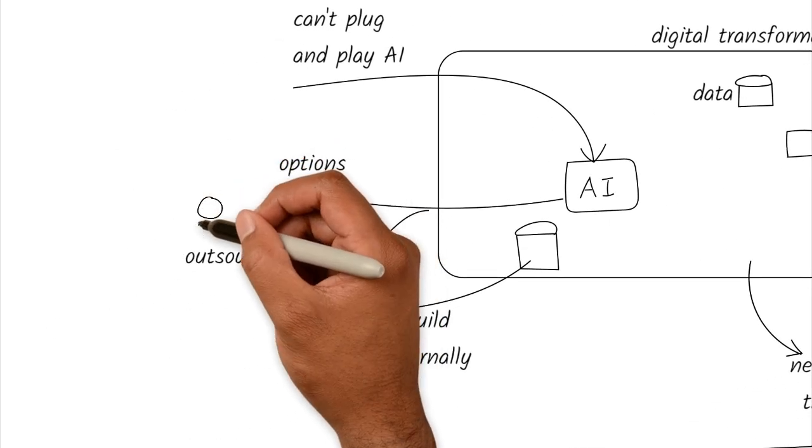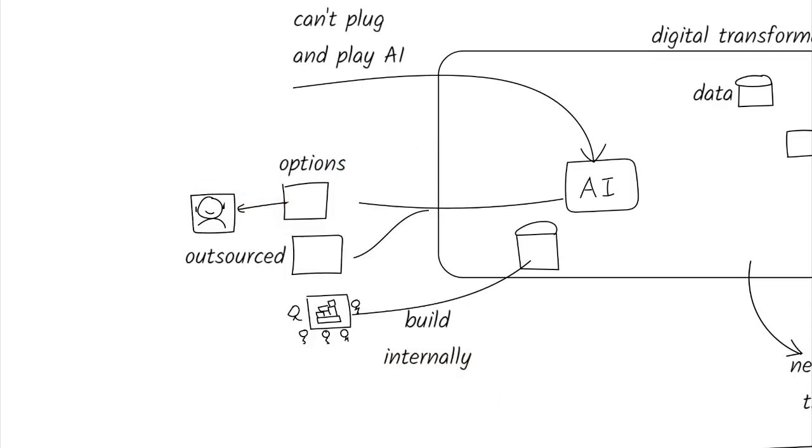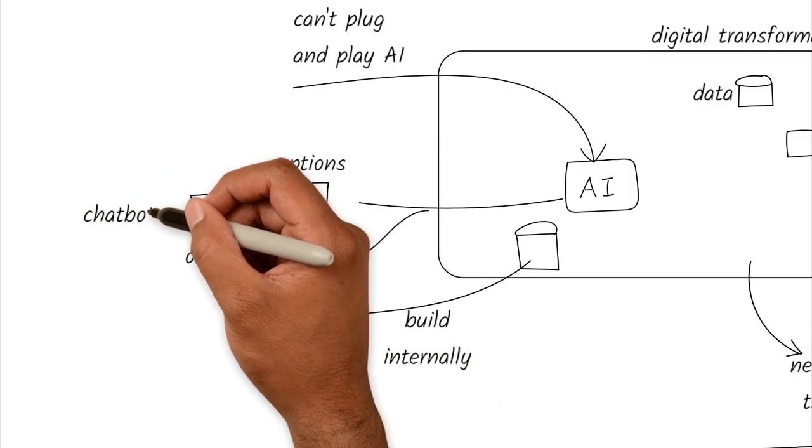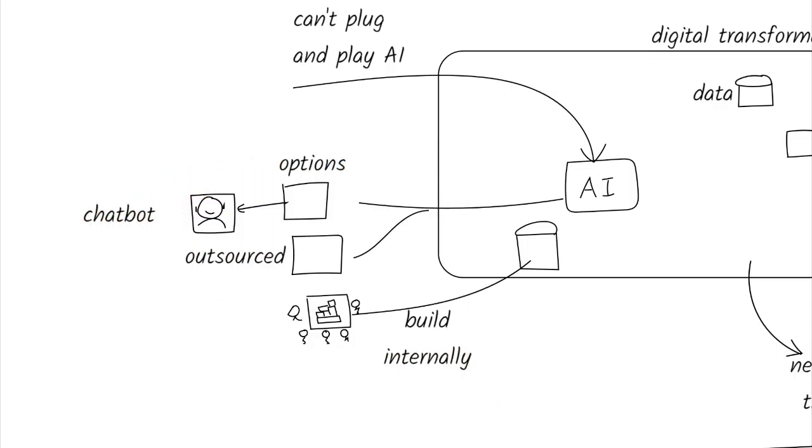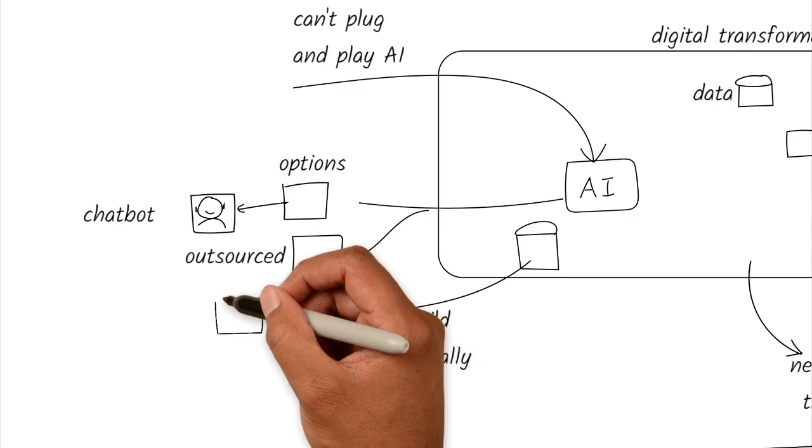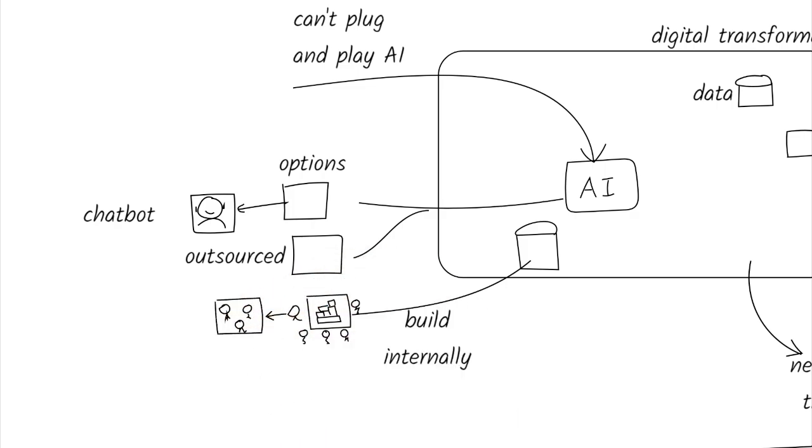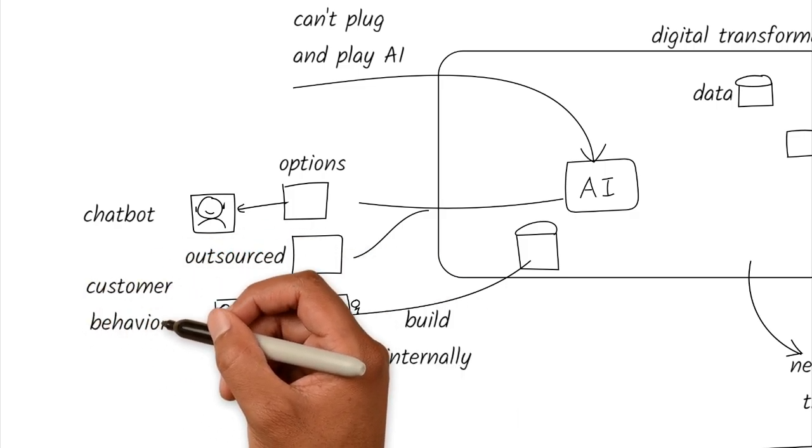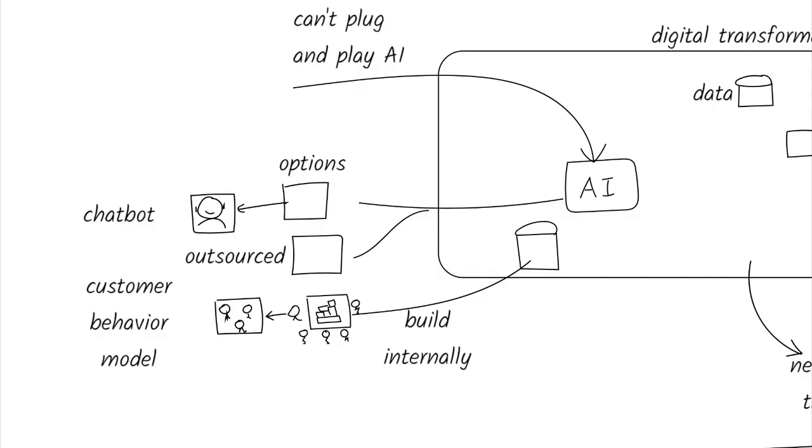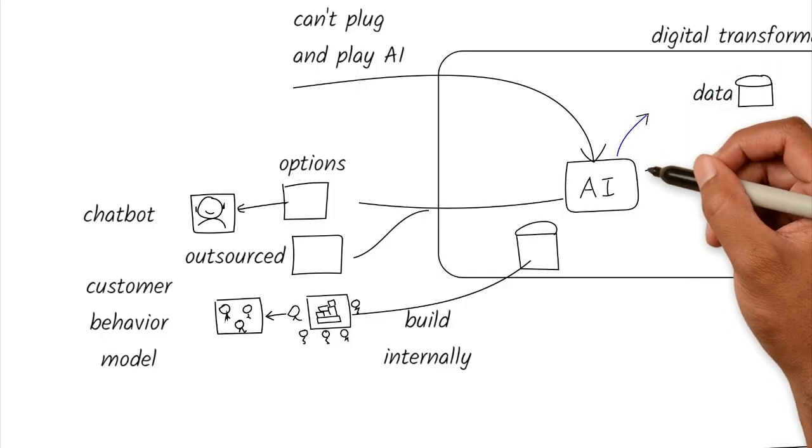For example, a chatbot using general customer service data might be easy to implement with an external vendor. But an AI model trained on your proprietary transaction history or customer behavior needs internal skills and focus. You can't just install it like an app.